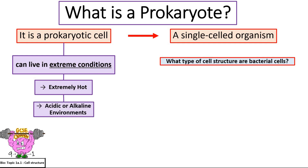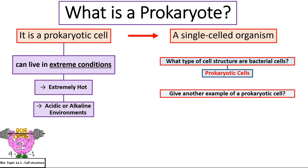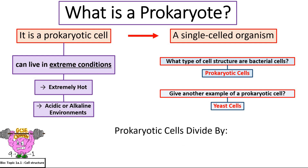What type of cell structures are bacterial cells? Bacterial cells are prokaryotic cells. Give another example of a prokaryotic cell: yeast cells. How do prokaryotic cells divide? Prokaryotic cells divide by binary fission.